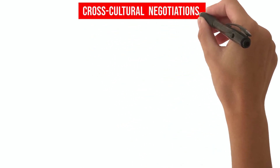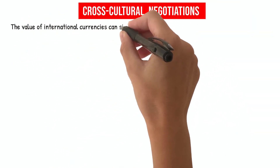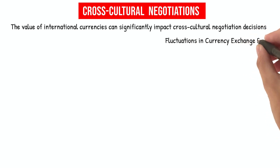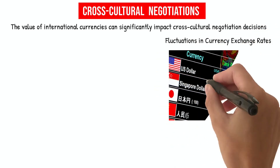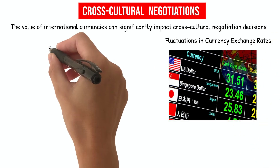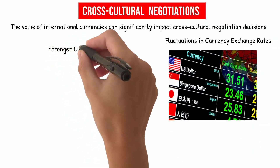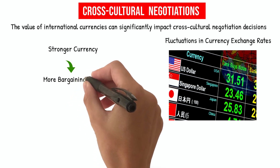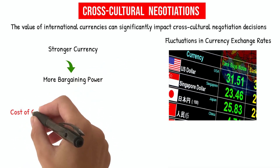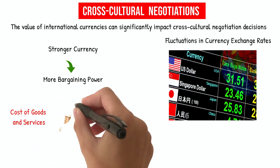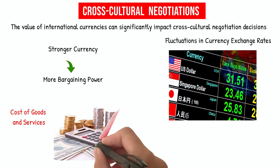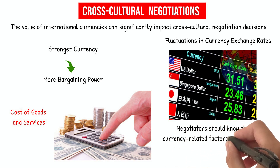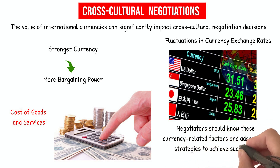Cross-Cultural Negotiations. The value of international currencies can significantly impact cross-cultural negotiation decisions. Fluctuations in currency exchange rates can influence the perceived value of offers and negotiated agreements. For example, if a negotiation involves a transaction in which one party is based in a country with a stronger currency, they may have more bargaining power due to the perceived higher value of their currency. Additionally, fluctuations in currency exchange rates can affect the cost of goods and services, further impacting negotiation outcomes. Negotiators should be aware of these currency-related factors and adapt their strategies to achieve successful cross-cultural negotiations.